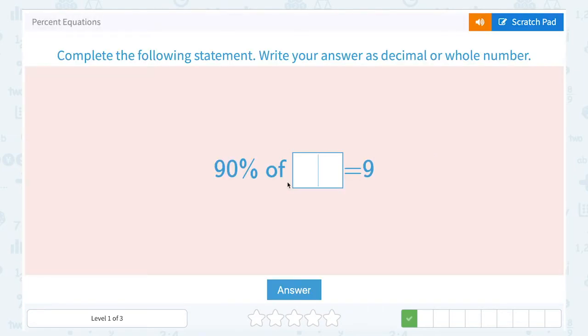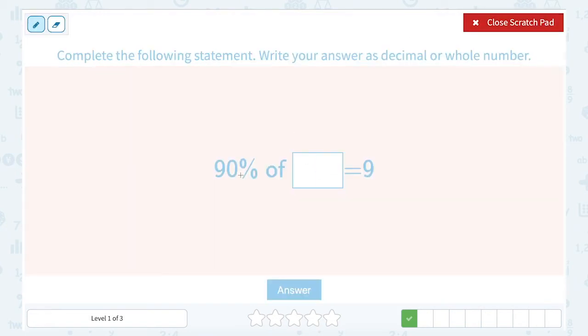90% of blank, some number, equals 9. Okay, so let's set up an equation. Remember that 90% is the same as 90.0%. Since they asked me to write my answer as a decimal or whole number, I'm going to turn my 90% into a decimal. So to do that, I need to move my decimal point two places, which gives me 0.90.